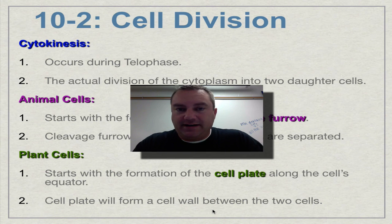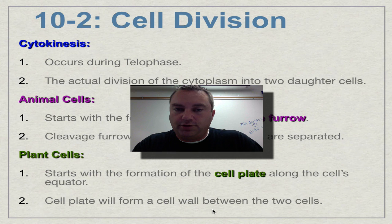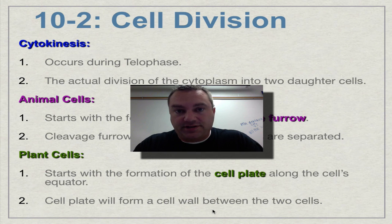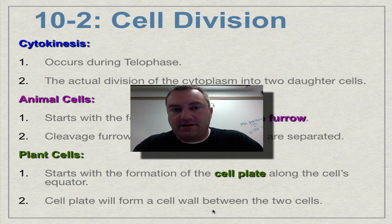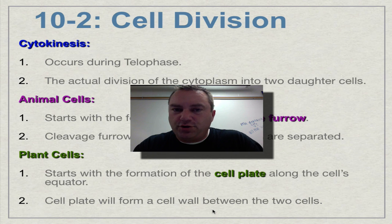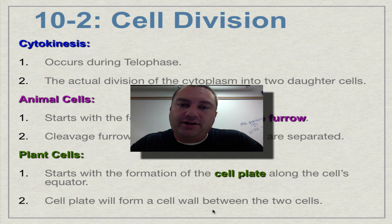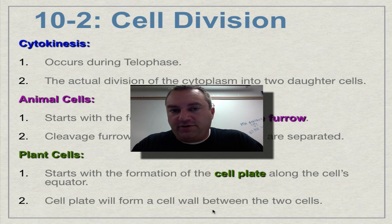Hi, welcome to episode 7. In this episode, we're going to learn the details of how cytokinesis occurs in an animal cell and how cytokinesis occurs in a plant cell. And then at the end of this episode, we're going to do a review of the eukaryotic cell cycle. We're going to go over what happens during interphase and a quick little review of what happens during the M phase.